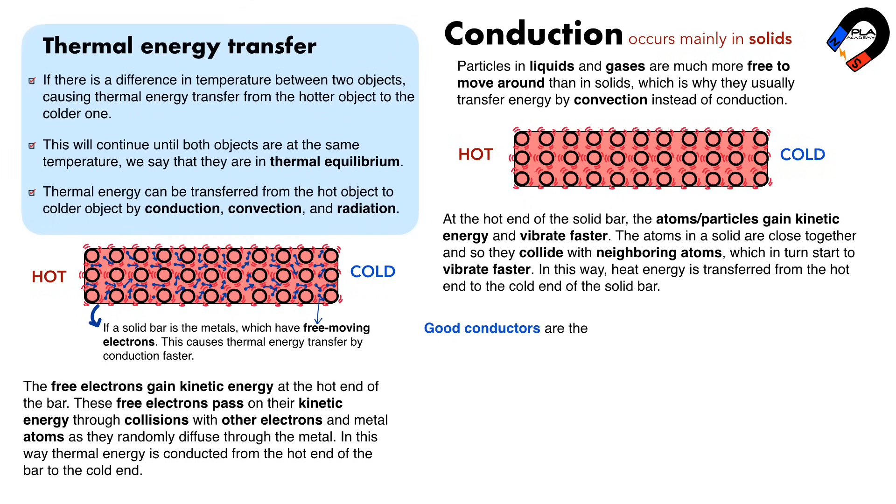Good conductors are the substances that can transfer heat energy easily because they have free-moving electrons. Good conductors are mainly the metals, such as silver, copper, iron, aluminum, brass, and others.